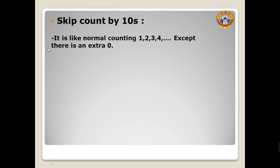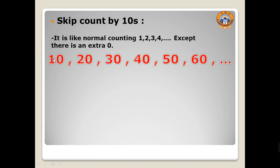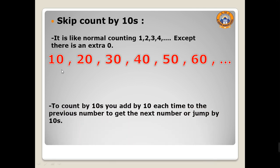Skip count by 10. It's like normal counting, 1, 2, 3, 4, except there is an extra 0: 10, 20, 30, 40, 50, 60. Look, each number has 0 in one place. Also, to count by 10s you add 10 each time to the previous number to get the next number, jump by 10s.